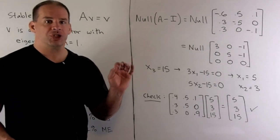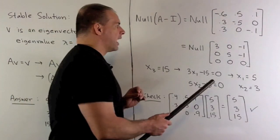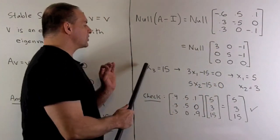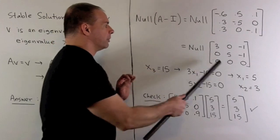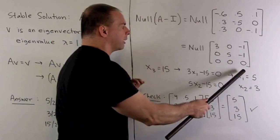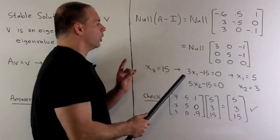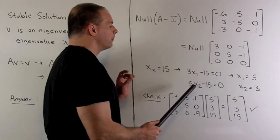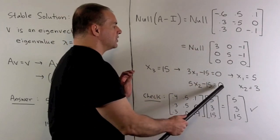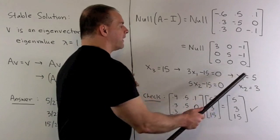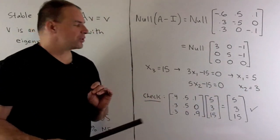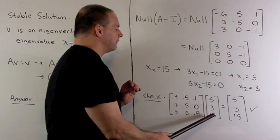With a little bit of foreshadowing, if we have X1, X2, and X3, if I let X3 be equal to 15, that's going to be our free variable since it's in the column without a pivot. You'll note, when we translate, we'll have 3X1 minus 15 equals 0, 5X2 minus 15 equals 0. So, I'll have X1 equal to 5, X2 equal to 3. My stable solution is going to be 5, 3, 15.